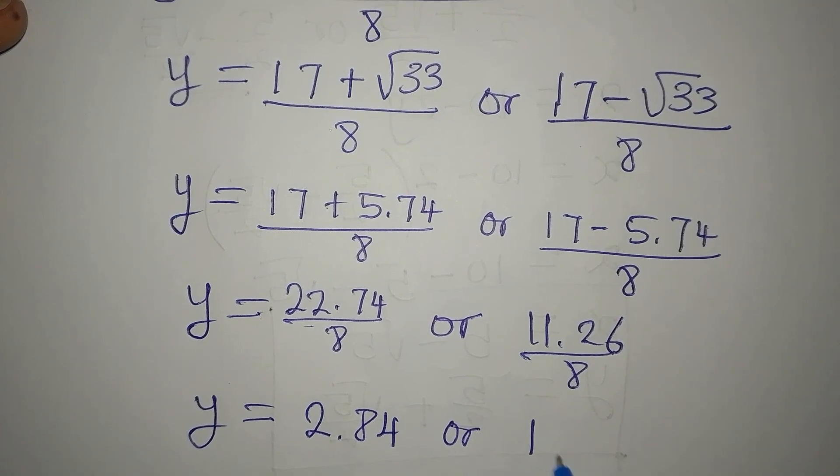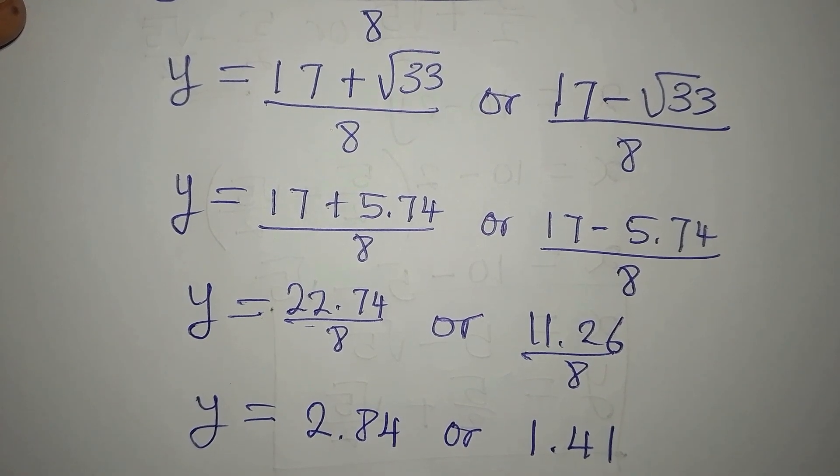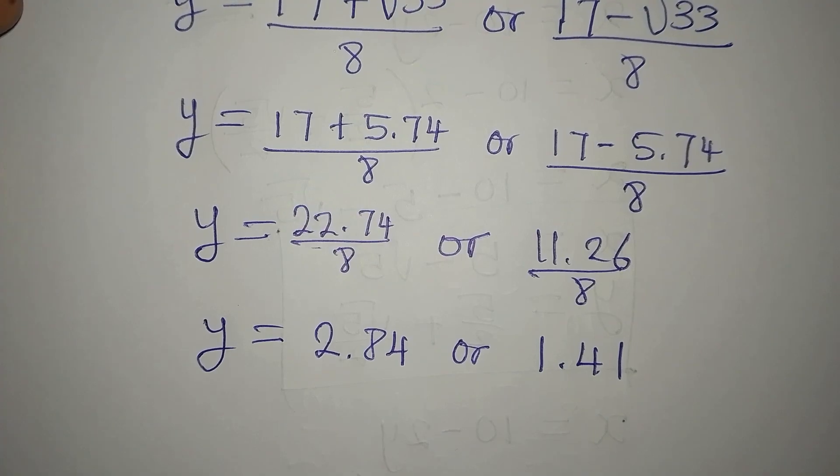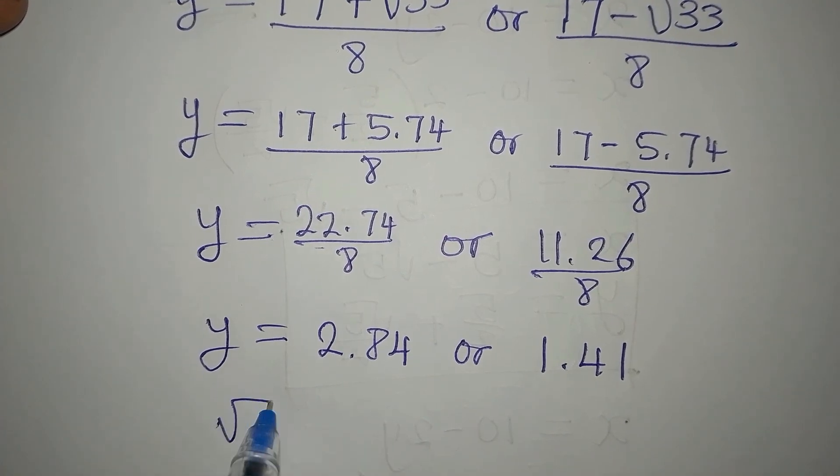Now y will be equal to this divided by this is approximately 2.84, or this divided by this is approximately 1.41. Now let's see the one that will satisfy, because the given equation is square root of y plus 2y equals 4.